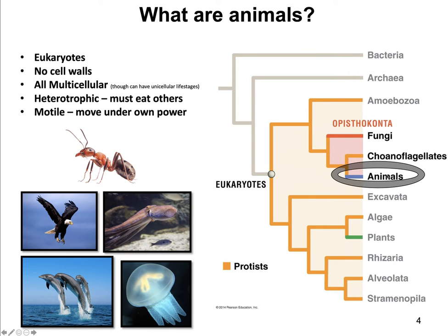When we talk about animals, we're talking about eukaryotic organisms. Animals do not have cell walls — their individual cells do not have cell walls. And all animals are multicellular. Though they can have unicellular life stages, like for example our sperm is a unicellular life stage, all animals are multicellular. They're also all heterotrophic, which means they get their energy from eating others. Hetero means other, troph means your energy source or food source, so they have to eat others to survive.